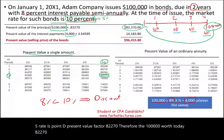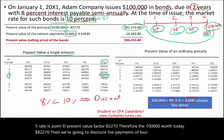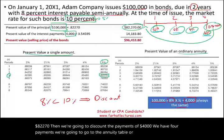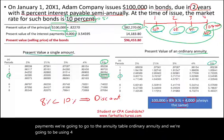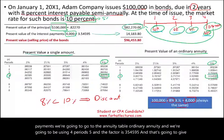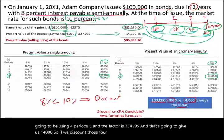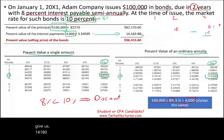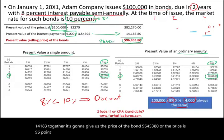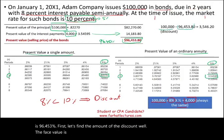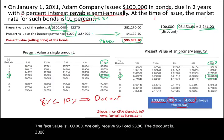Then we discount the four payments of $4,000. We go to the ordinary annuity table — four periods, 5% — and the factor is 3.54595, giving us $14,183. Together, the bond price is $96,453.80, or 96.453% of face value. The amount of the discount is the face value of $100,000 minus the proceeds of $96,453.80, which equals $3,546.20.